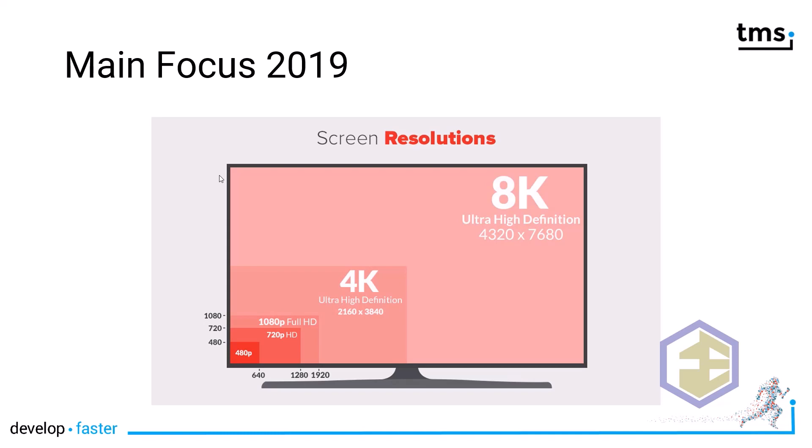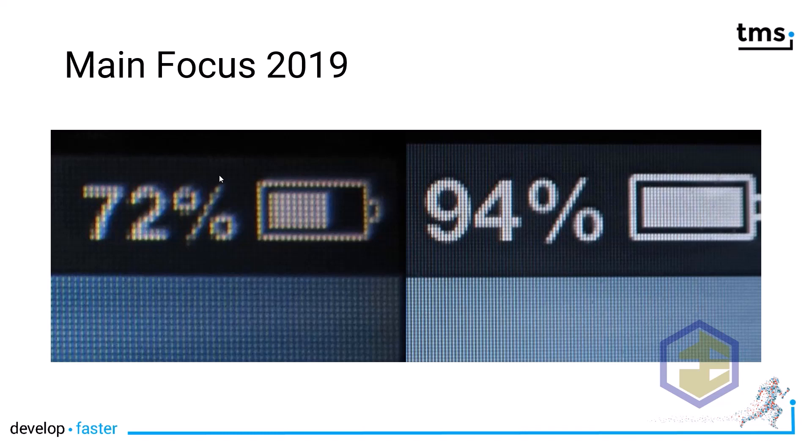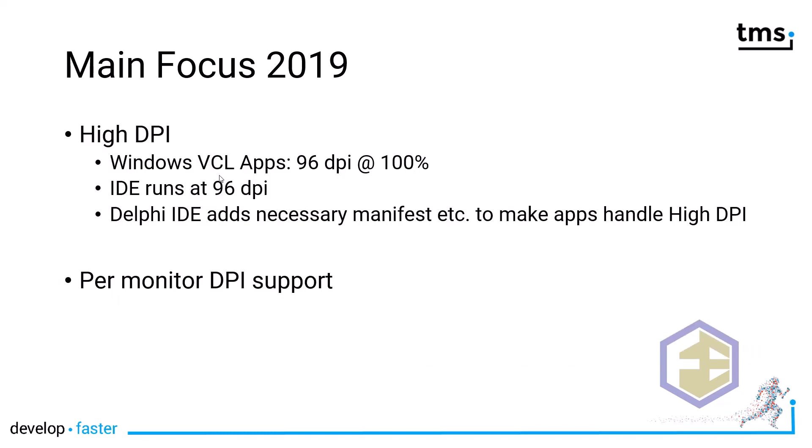Screen resolutions have grown significantly since the inception of Delphi. It all started with 480p and now we have to deal with 8K ultra high definition displays. In addition to higher resolution, the pixel density has also increased. For example, an image that is 100×100 pixels displayed on a screen at 200% zoom — meaning the density is twice as high — will only be displayed as 50×50 pixels, so your application has to compensate for that. A normal Windows VCL app runs at 96 DPI, meaning 100%. If you buy a new Surface, that screen most likely runs at 150% or 200% zoom.